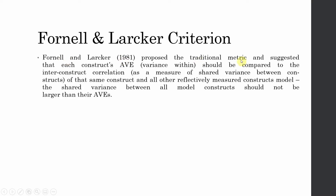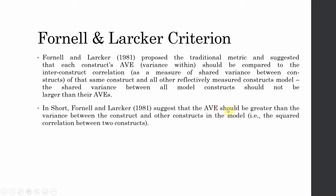So what is the Fornell-Larcker criterion? Fornell and Larcker proposed the traditional metric and suggested that each construct's AVE — that is, variance within — should be compared to the inter-construct correlation as the measure of shared variance between constructs. You are comparing the AVE, which is variance within the construct, with inter-construct correlation, which is the shared variance with all other reflectively measured constructs. This AVE must be greater than the square of the correlation, or the square root of AVE must be greater than the inter-construct correlation.